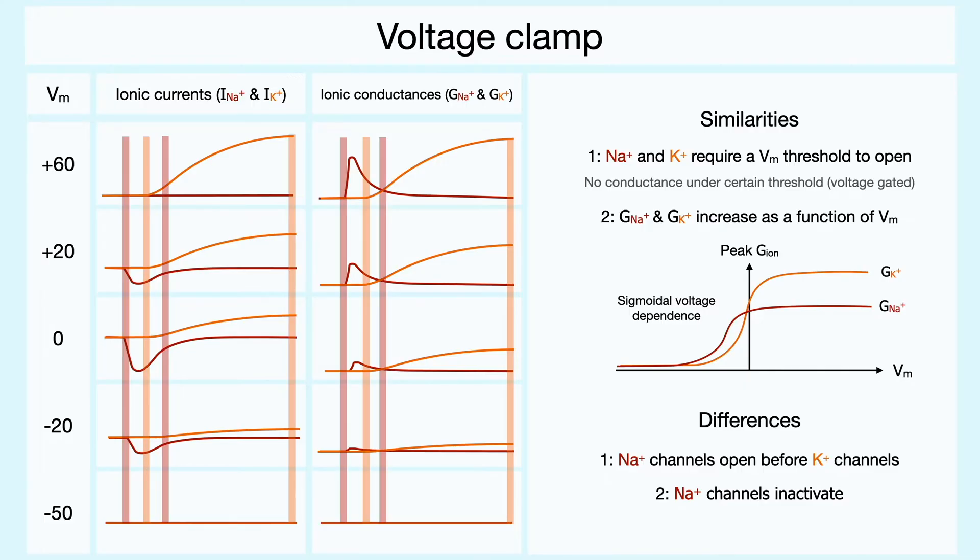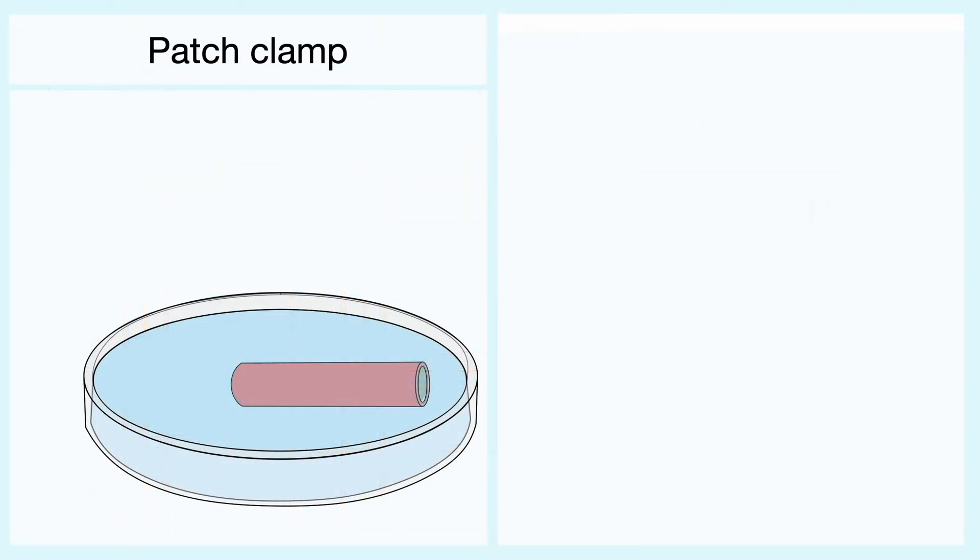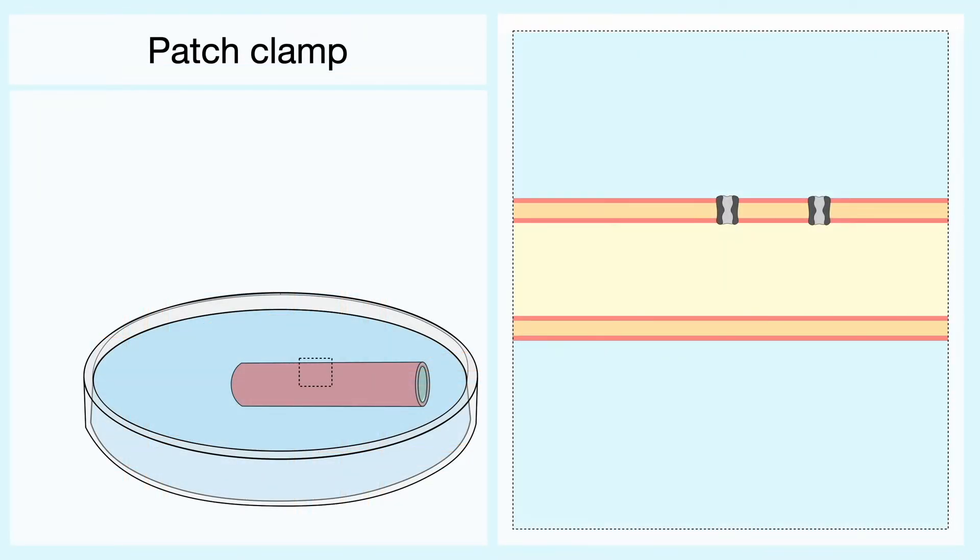To record currents coming out of a single channel, scientists use the patch clamp technique. In this technique, a small micropipette which contains an aqueous solution of varying concentrations is pressed against the membrane of the neuron. After applying a bit of suction to the back of the pipette, it allows to create a very tight electrical seal on the edges such that there is very little ionic leak in and out of the pipette.